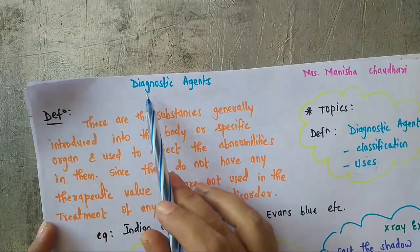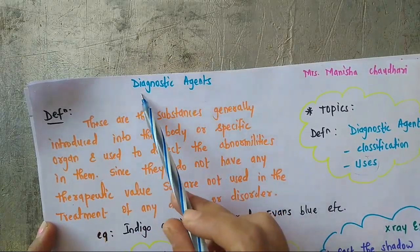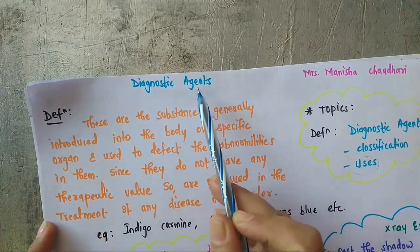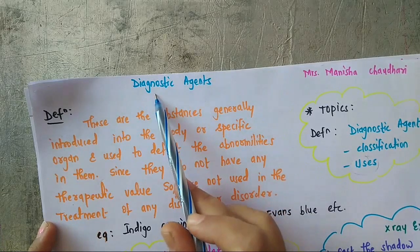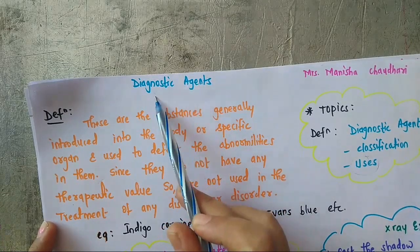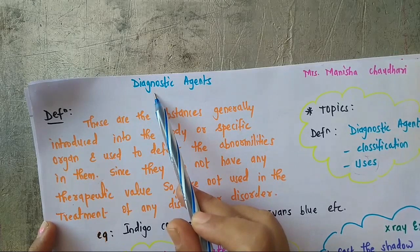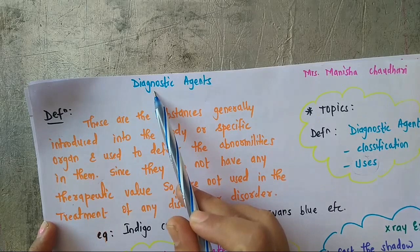As the name suggests — diagnostic agent means agents used for some diagnosis. Since they are used only for diagnosis, they are not used to treat any diseased condition, since they do not have any therapeutic value.